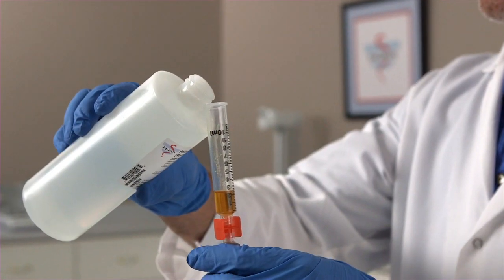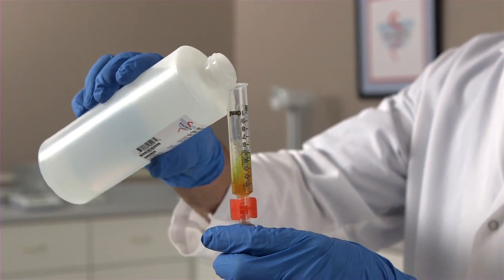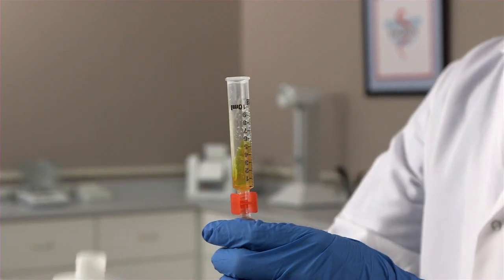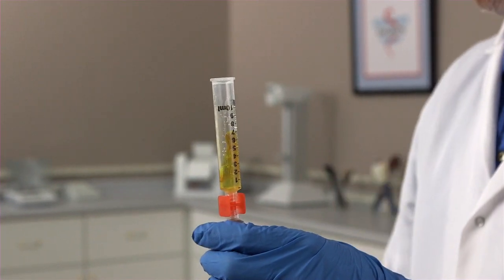The last step is to add the Paloxamer 20% gel to the 10 ml mark on your luer lock syringe.